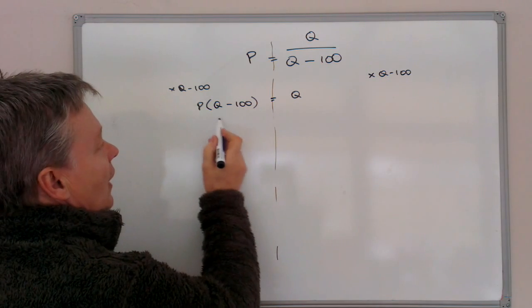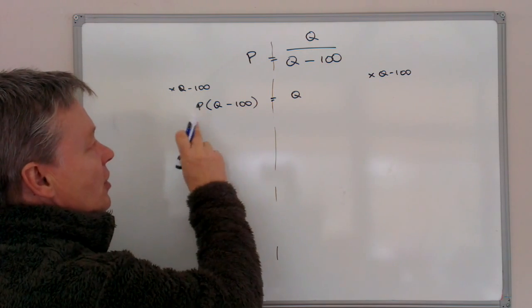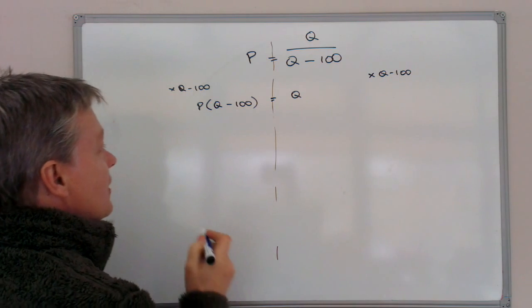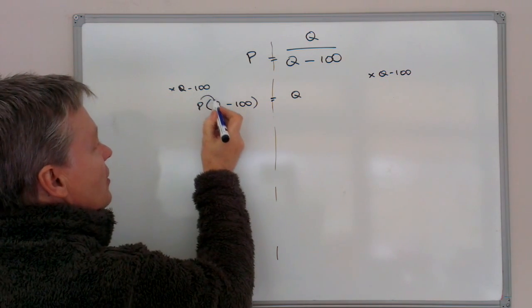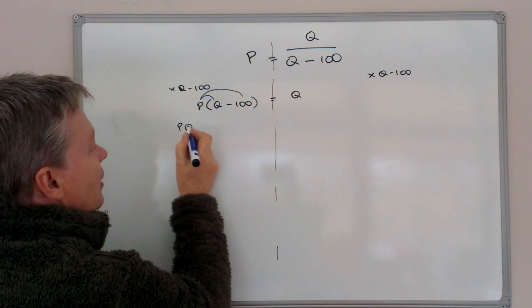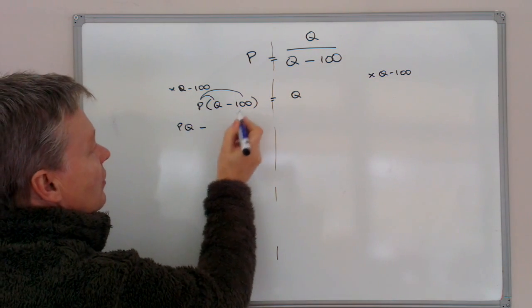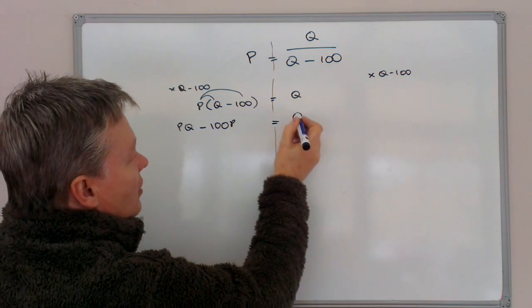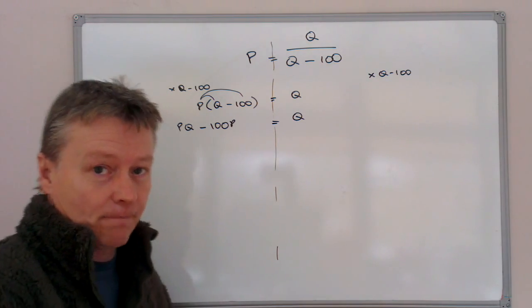So as a bracketed term or two terms multiplied together, I'm just going to multiply those out so I can deal with them separately. So I'm going to multiply those two. And I've got on this side, PQ minus 100P. And that's going to equal Q that side.